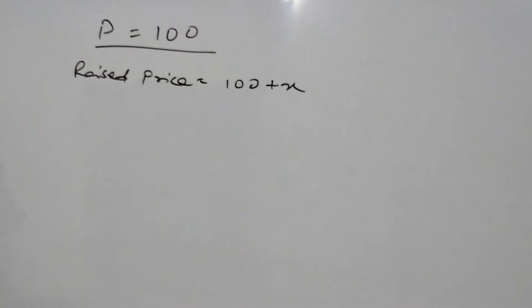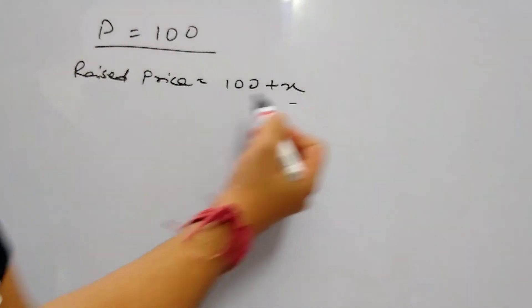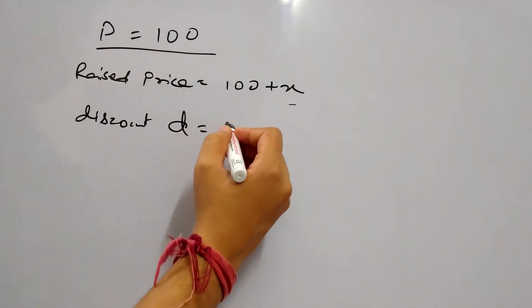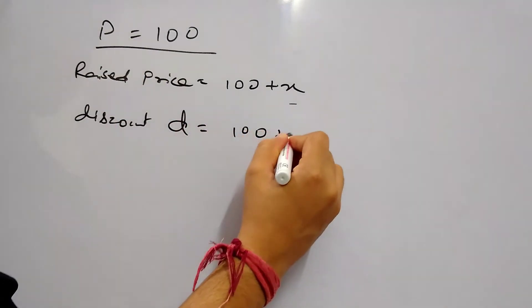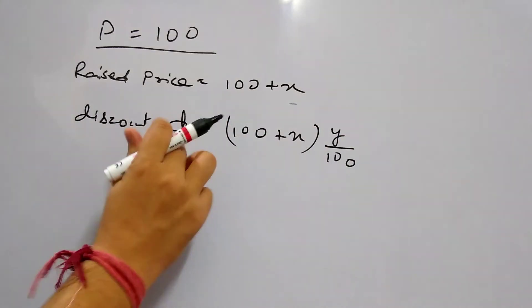And now the shopkeeper is applying some discount on this raised price. So the discount on this is, let's say D is Y% of this. So it is 100 plus X into Y by 100, this is only the discount.